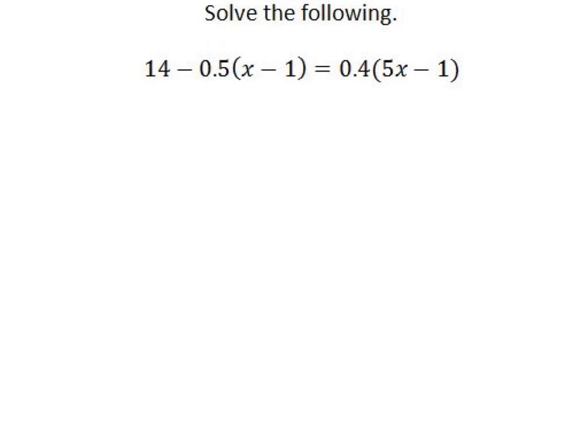For example, on the right side, we have 0.4 times 5x minus 1. What is 0.4? It is 4 tenths. In other words, it can be replaced with 4 over 10. So when you see a decimal, 0.4 or 0.5, you're looking at a different form of a fraction.